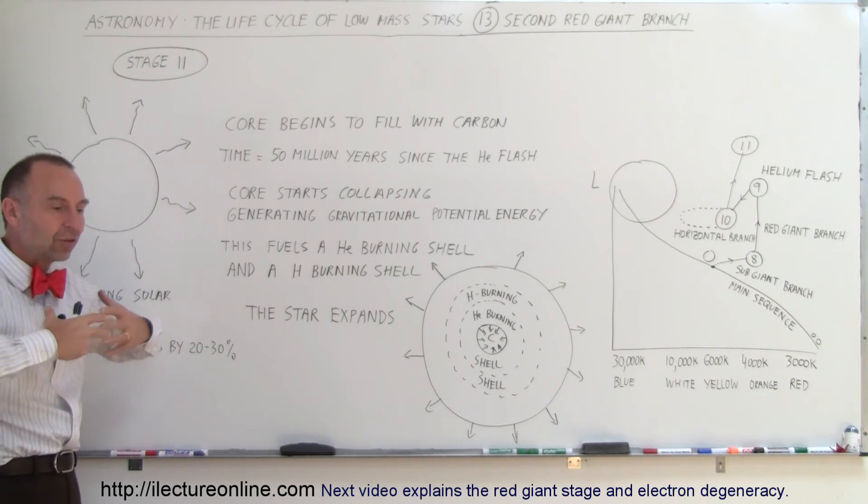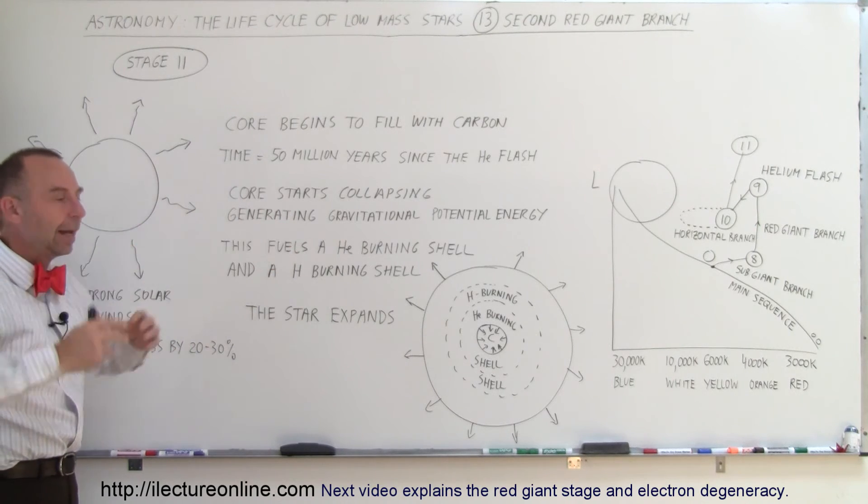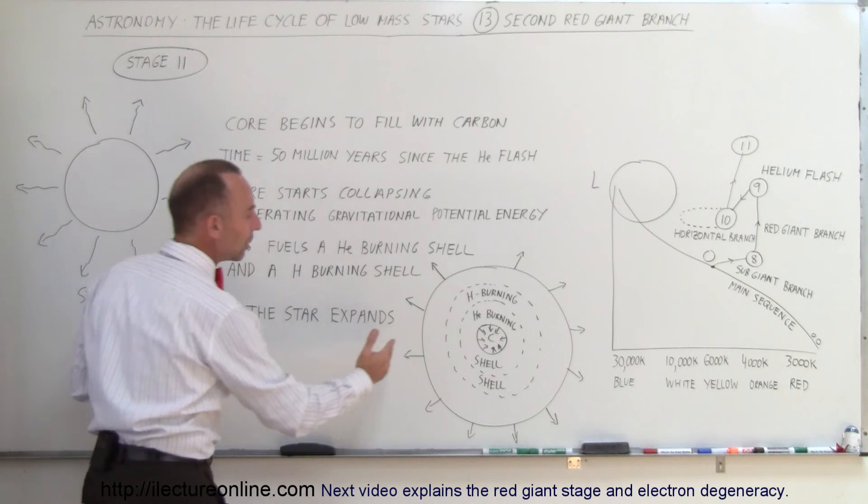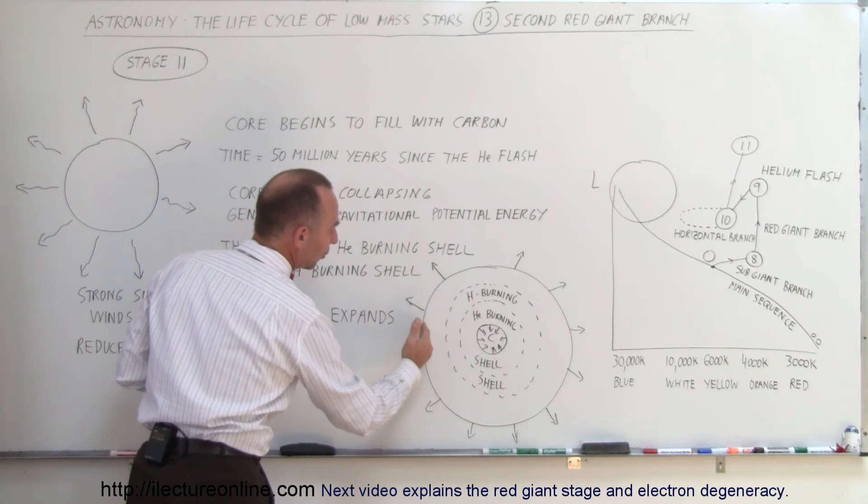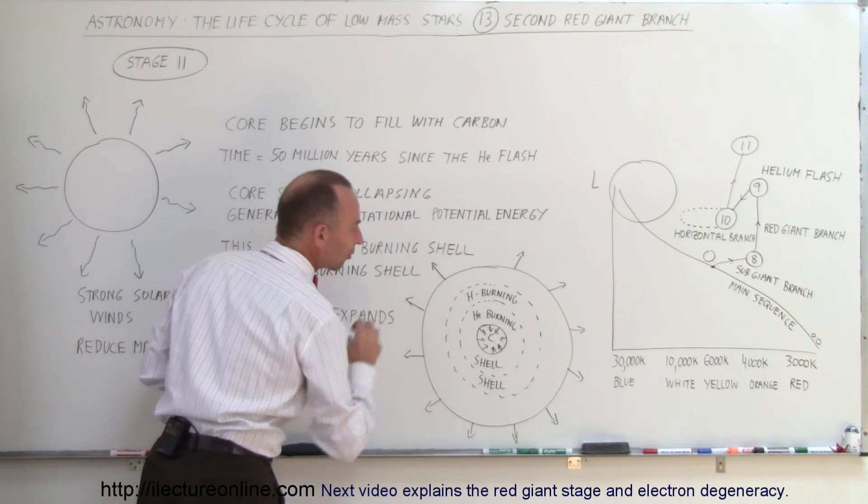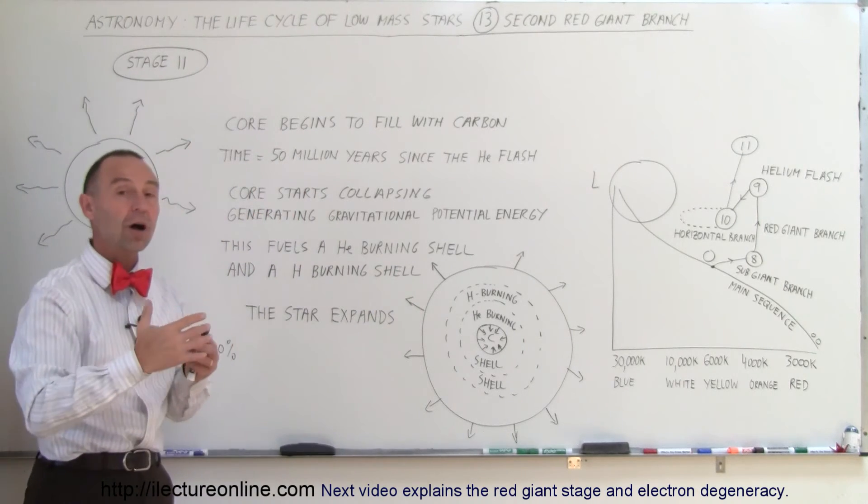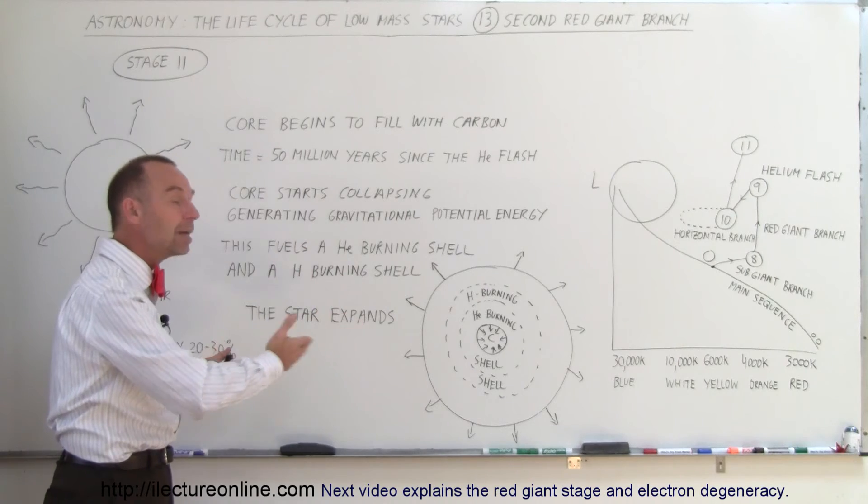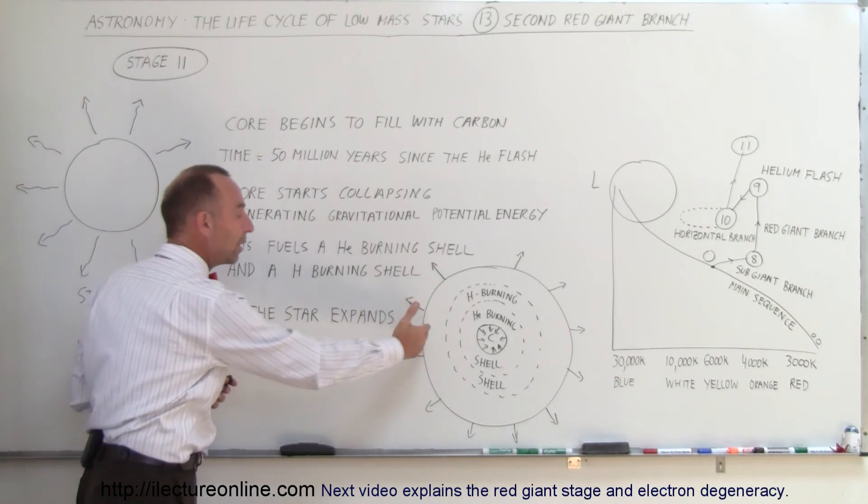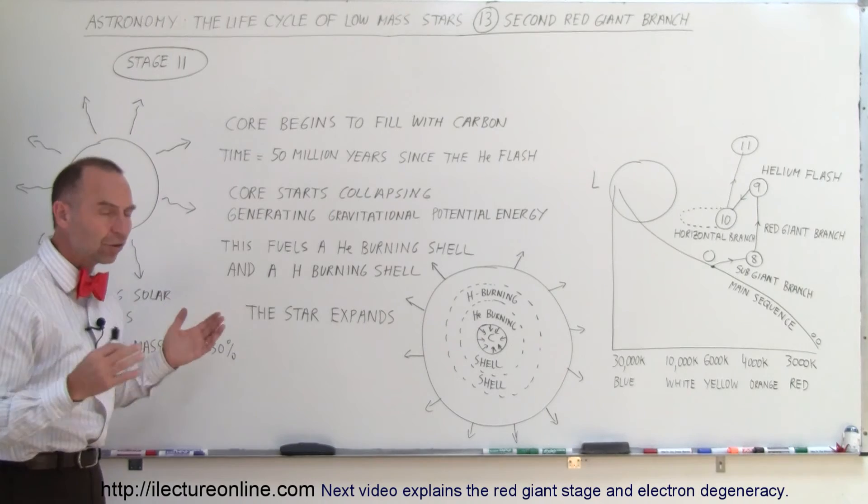The mass just gets carried away. The reason why it's able to do that is because these outer regions of the star are so far away from the center of the star that the gravitational forces at the very edge of the star aren't as strong. So it doesn't take a lot of speed or velocity for the wind to carry mass away from the star.